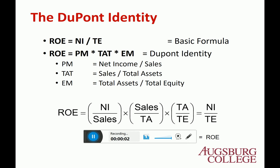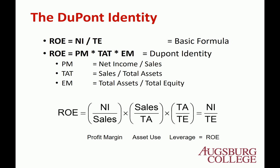This is clip 2 from DuPont Identity. Last clip, we saw the various different types of ratios to analyze the firm. Now this is one way to apply the ratio analysis, especially by looking at the return on assets. Your return on asset is net income divided by total equity, as we saw in the previous slide.